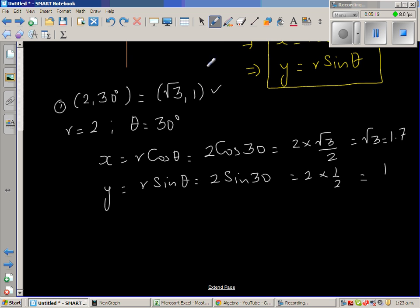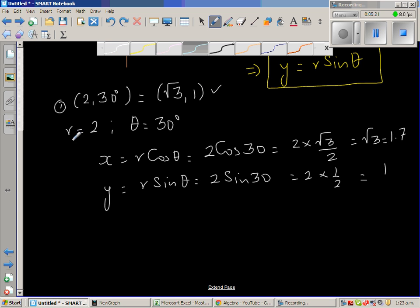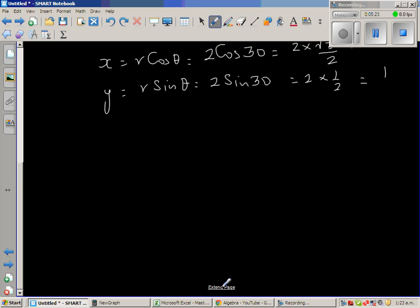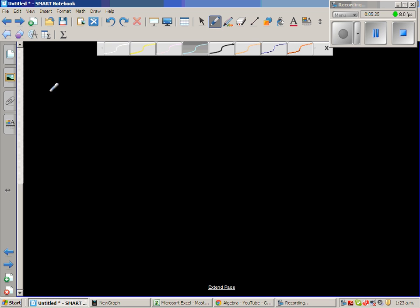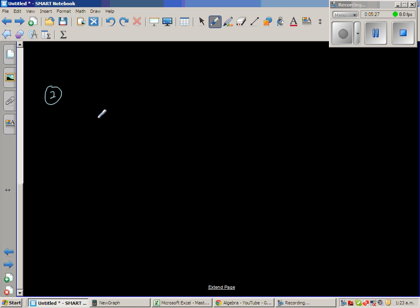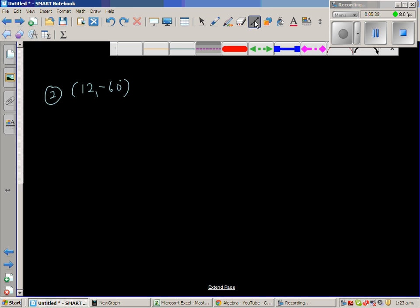So 1.73, which is √3, and 1. So your answer is right. So this answer is right. So let me do one more example. Let me change the question. Say it is (12, -60°).